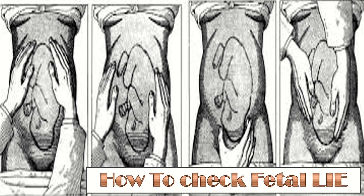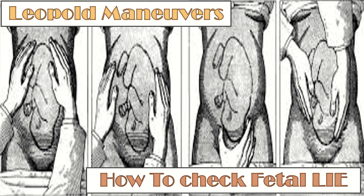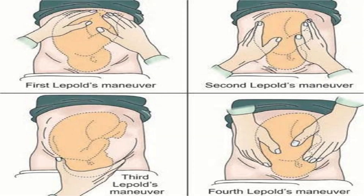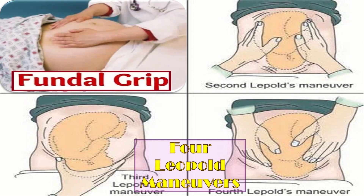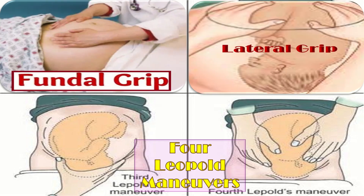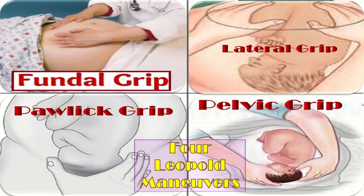Fetal lie is assessed by four Leopold maneuvers. These include: first, the fundal grip; second, the lateral or umbilical grip; third, the Pawlik grip; and fourth, the pelvic grip.